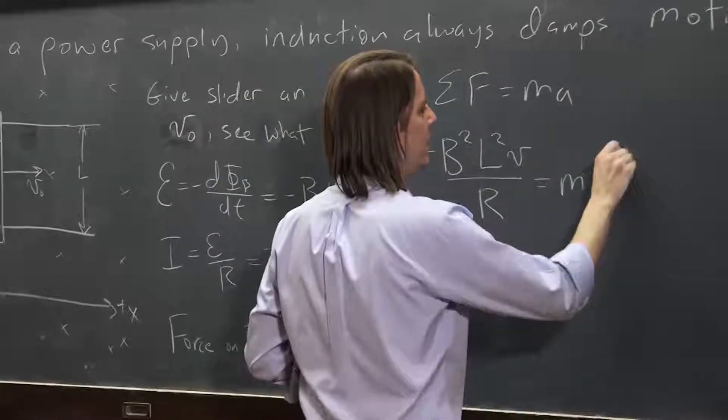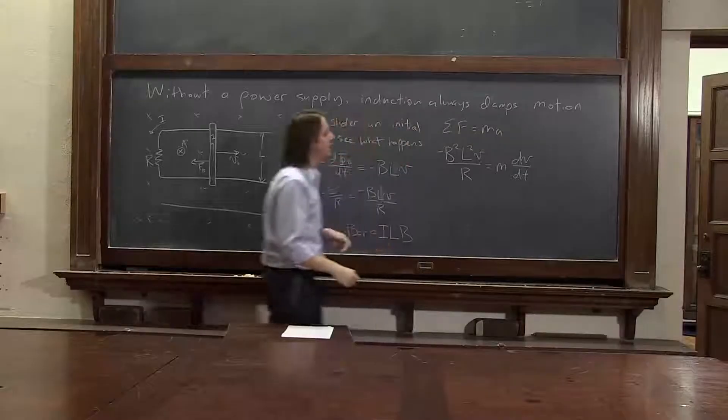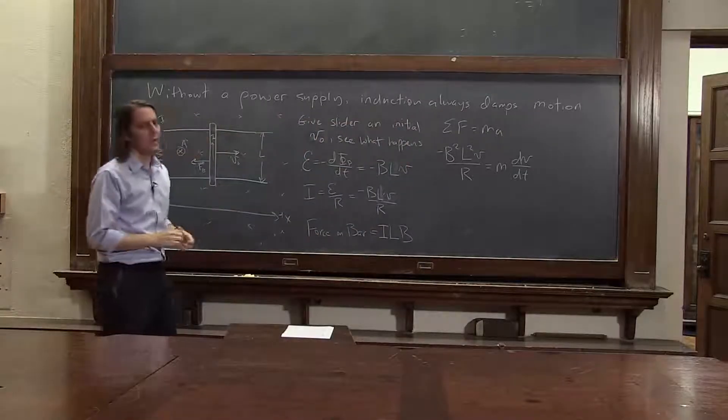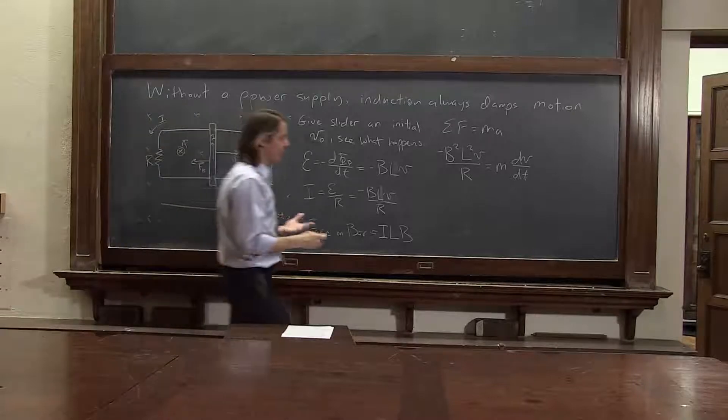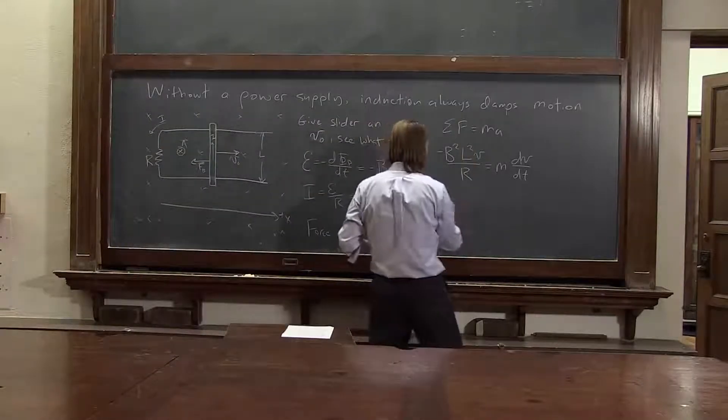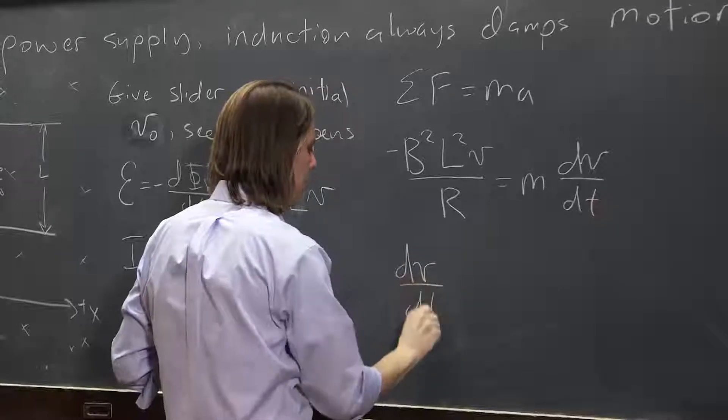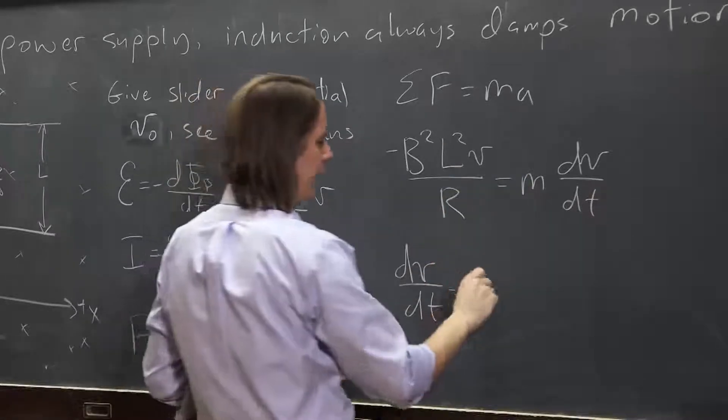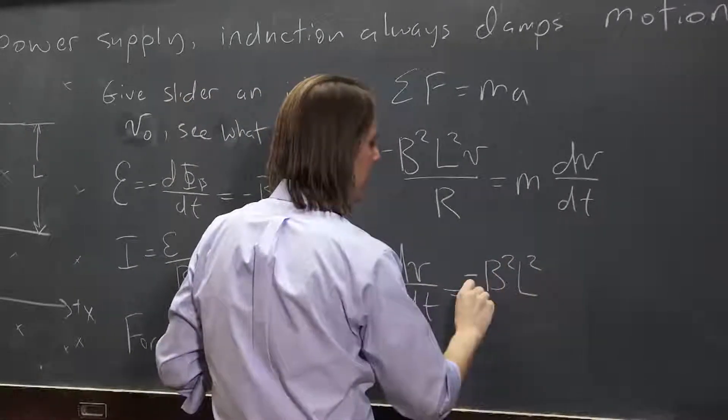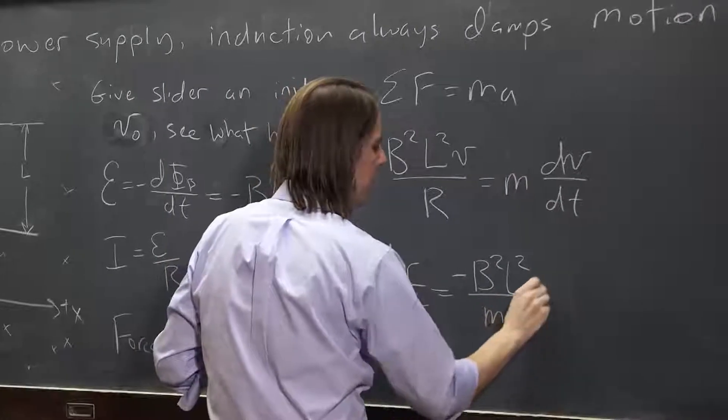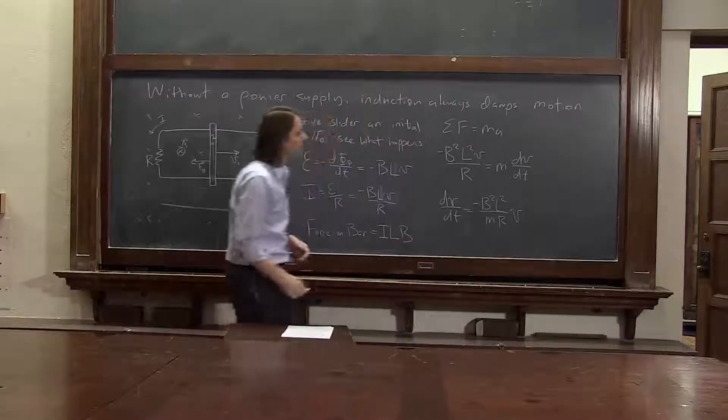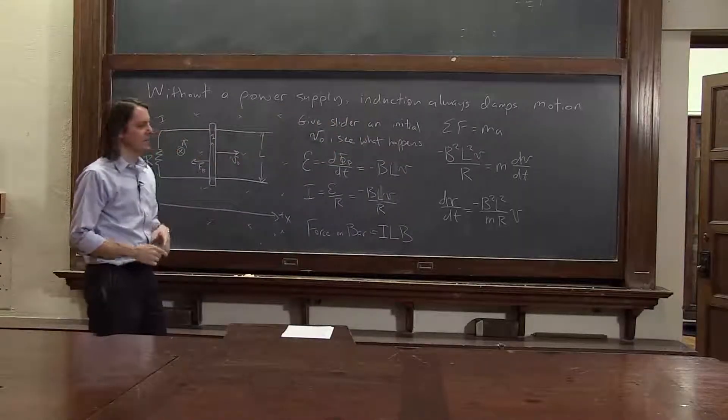And what is a? A is dv dt. So now if we solve for, well, we'll try to simplify it. We can solve for dv dt equals, we can bring the m over here, minus b squared L squared over m R v.